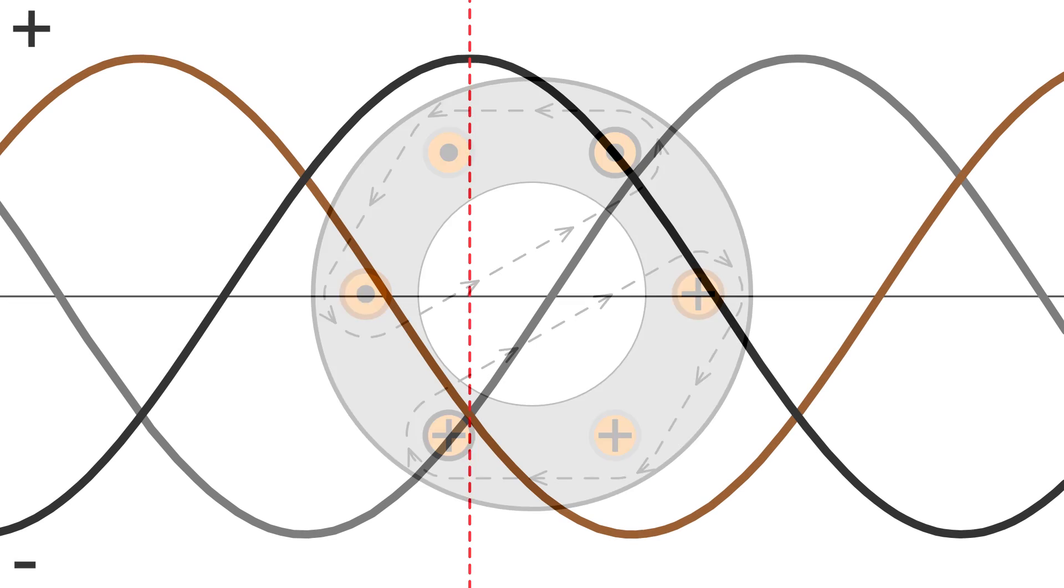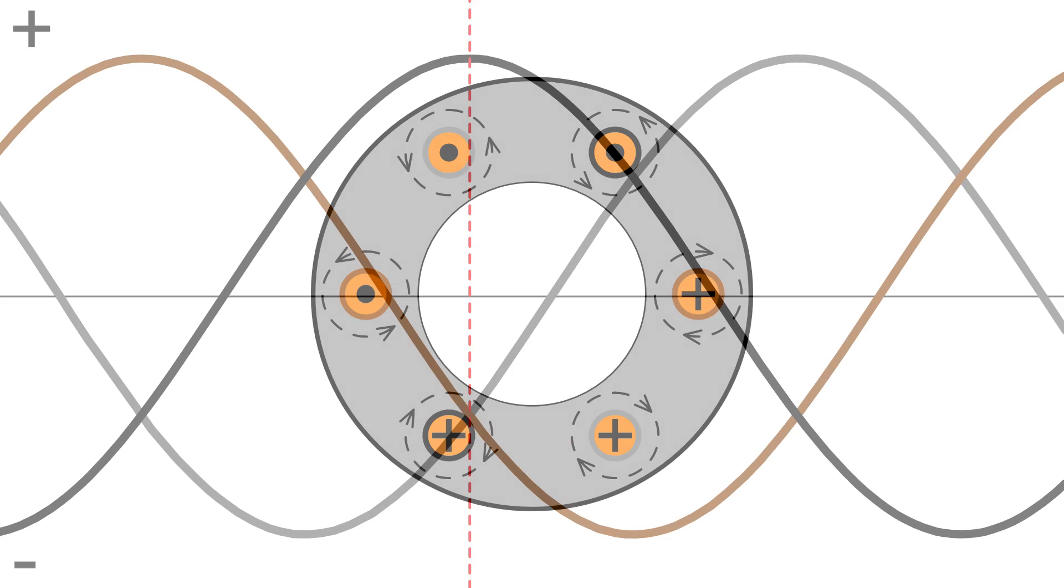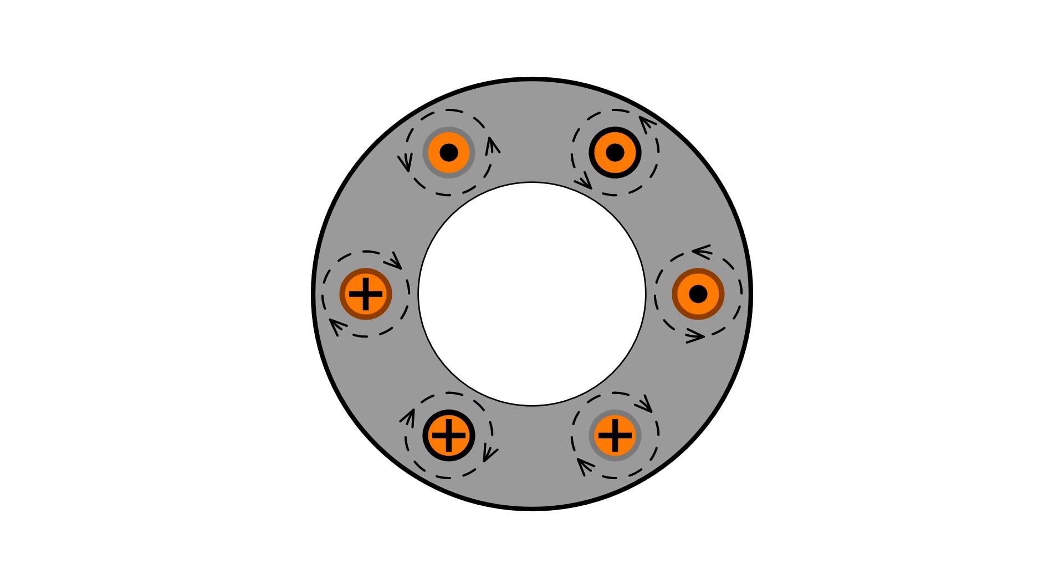If we look at a third moment in time in our three-phase waveform we can see that the L2 current is now peaking at a maximum positive value and the L1 current has gone negative and therefore changed direction. So now our cross section has the opposite current flow in L1 and it makes the whole magnetic field look like this.